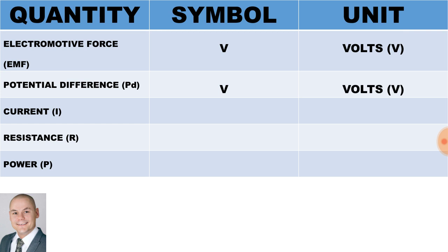The current is represented by the letter I and the units is amperes. Resistance is represented by the letter R and is measured in ohms. Power, the symbol is P and the units is watts.